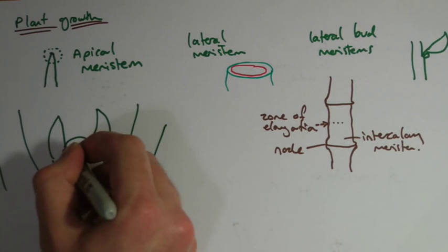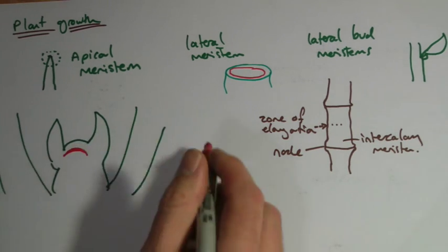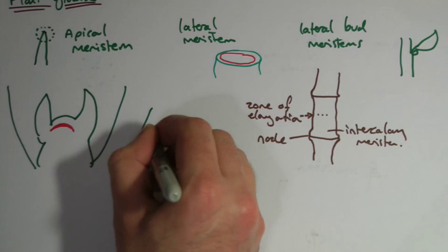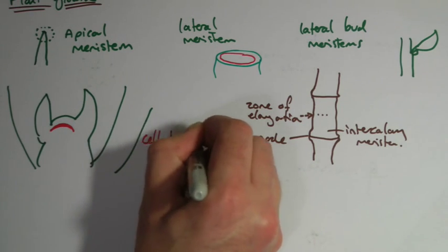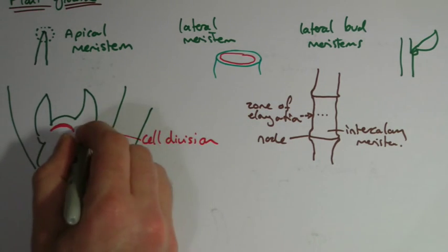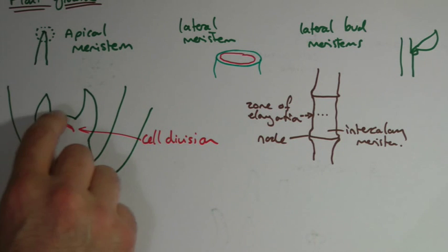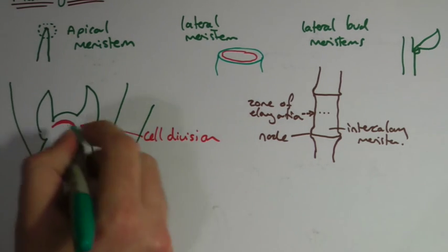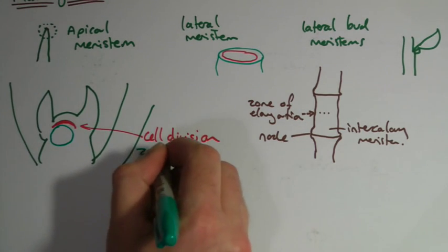Just up here is this region where we get cell division. So the cells divide just behind the apex of the root, just behind the very tip of the root. But behind that is the bit where we have the zone of elongation.